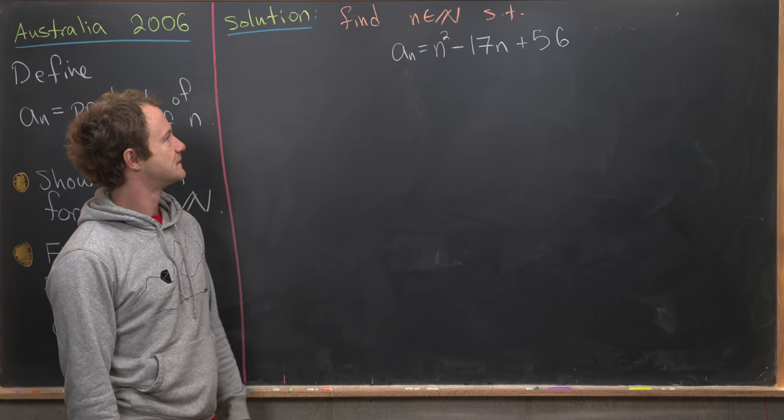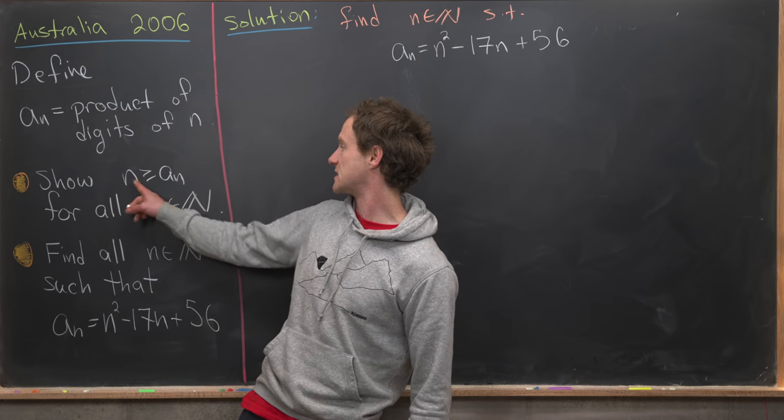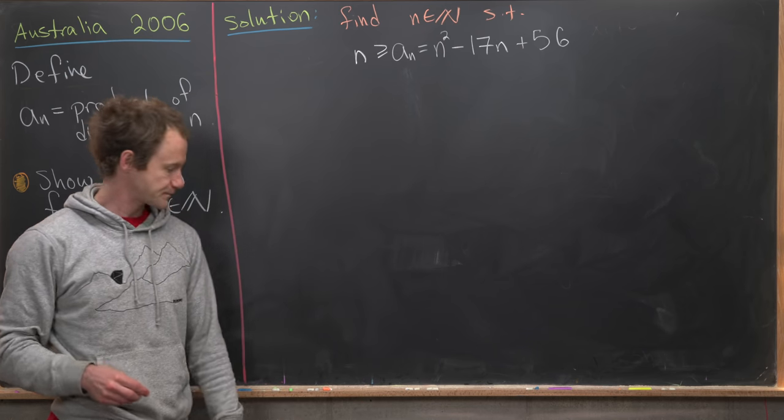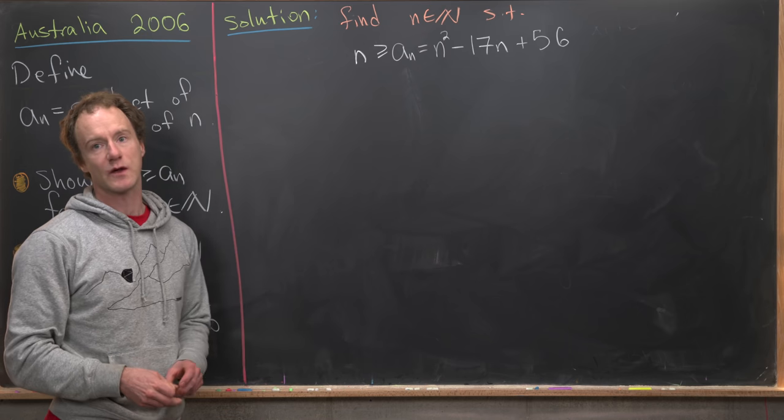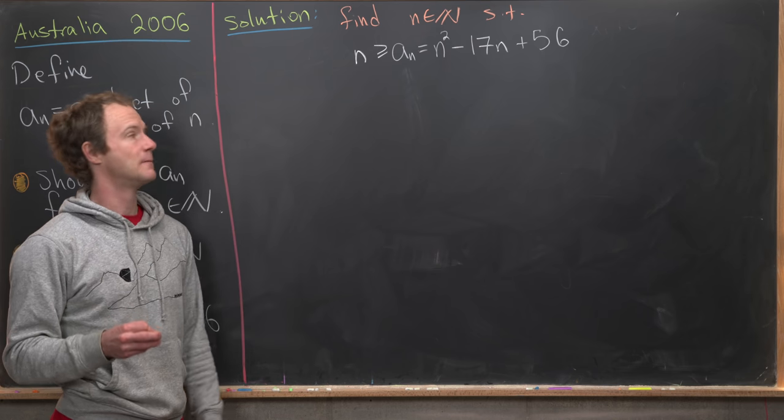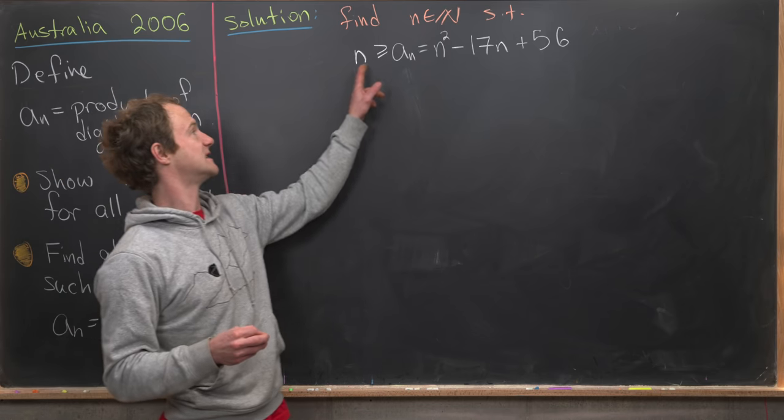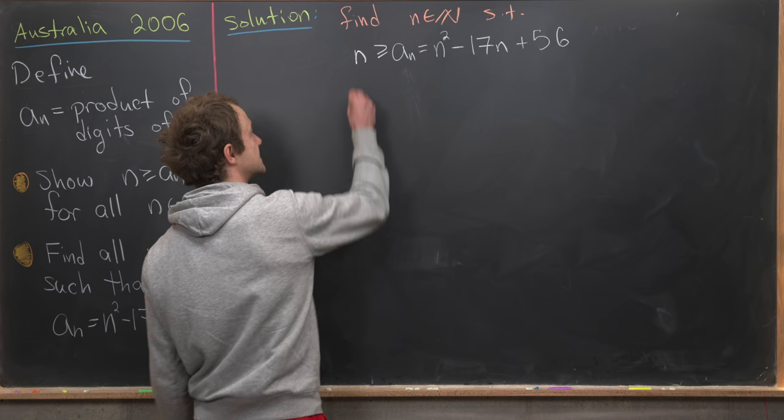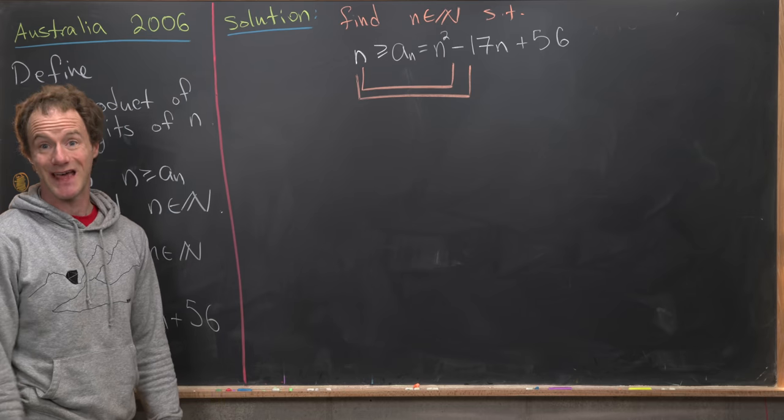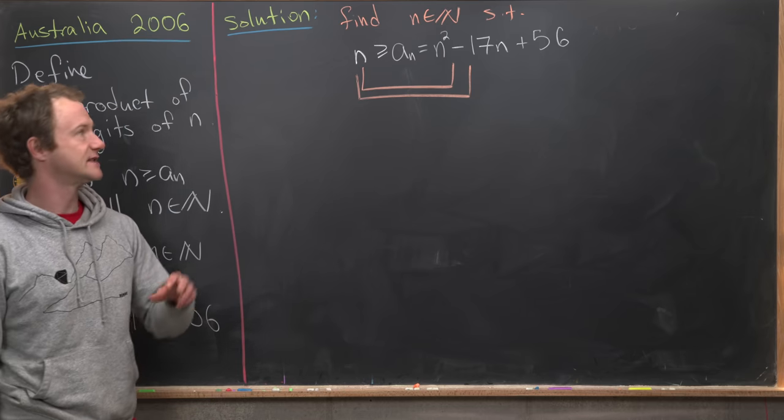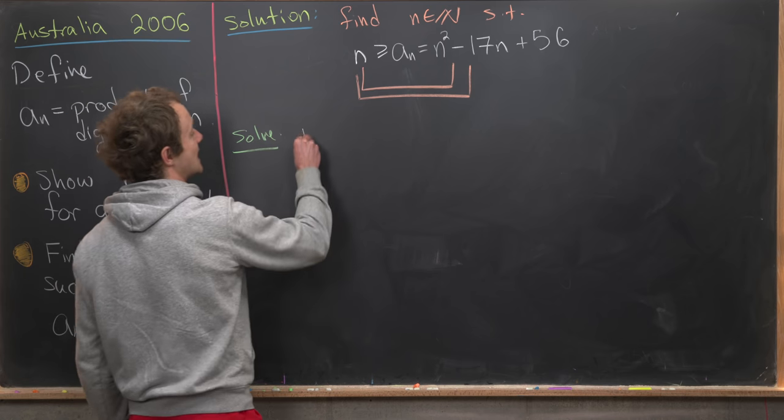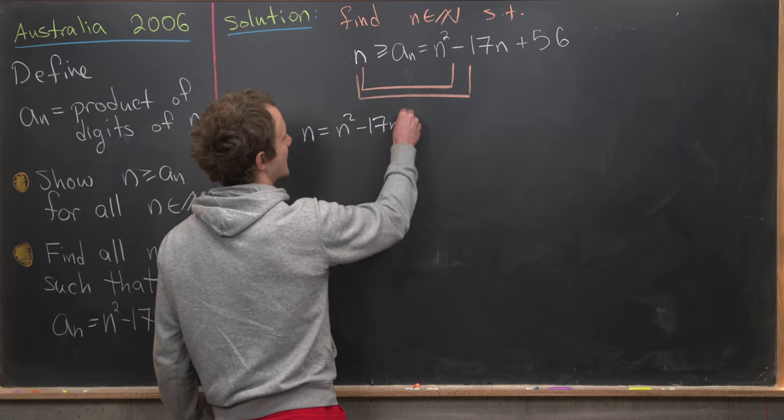What we want to use is the fact that a_n is less than or equal to n for all values of n. Then next, instead of solving our goal equation, which might be quite difficult because it's hard to get a handle on this function a_n, maybe we can solve this thing that is like hugging our goal equation. In other words, let's solve this equation given by n equals that quadratic expression instead. And then maybe we can use that to reason what the solutions to a_n are. So just to reiterate, what we'll solve instead is n = n² - 17n + 56.